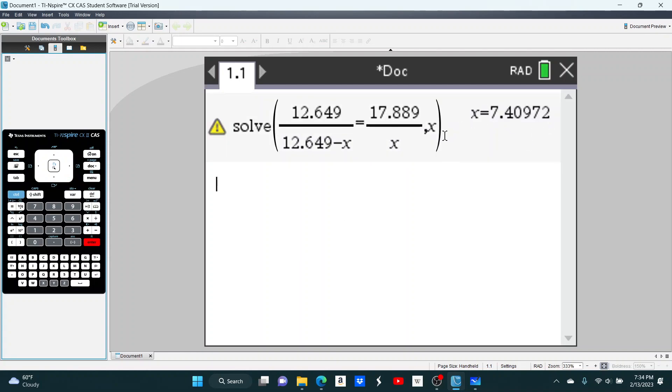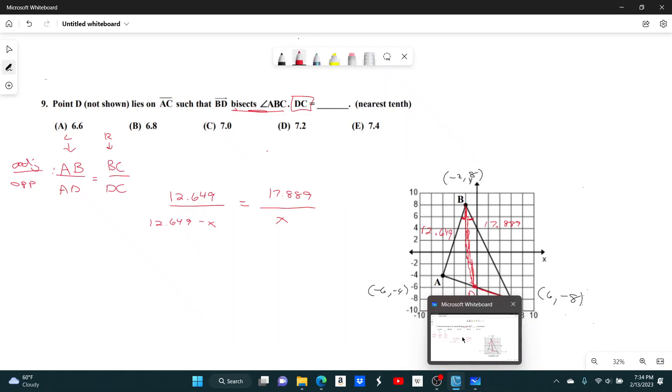So, we get CD, or what was it? DC or CD? One of those two. Has a length of 7.4. And I believe it was rounded to the nearest tenth. And yes, we get answer choice E.